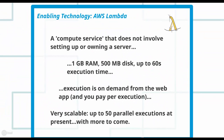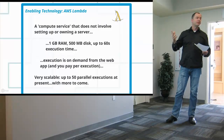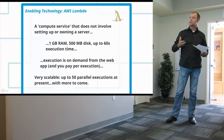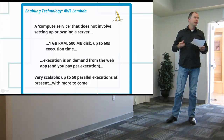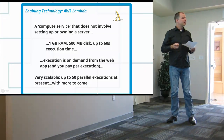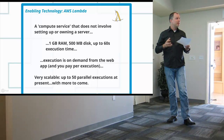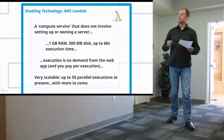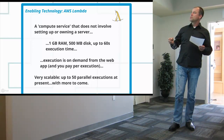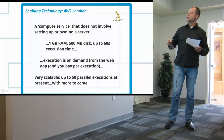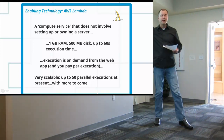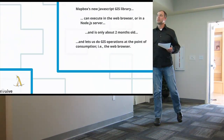AWS Lambda, which I mentioned, is a new technology from Amazon. It's a compute service that doesn't involve owning or setting up a server. Instead, it's execution on demand, and it's perfect for medium-weight geoprocessing. You pay per execution, you get a fair number of resources per execution, and you can do a lot of concurrent executions.